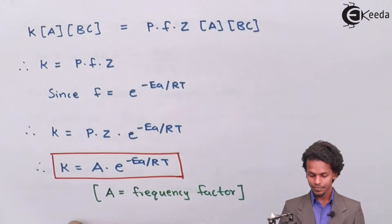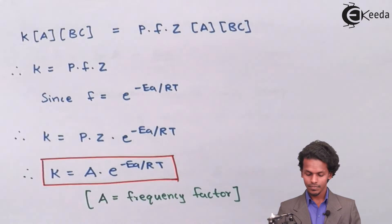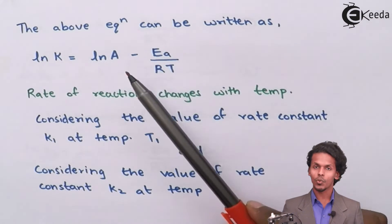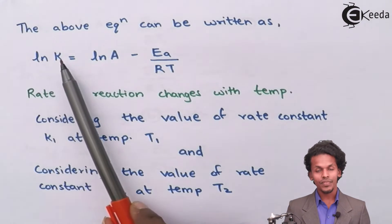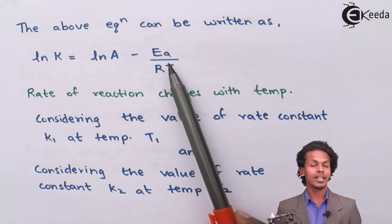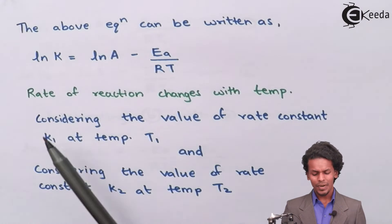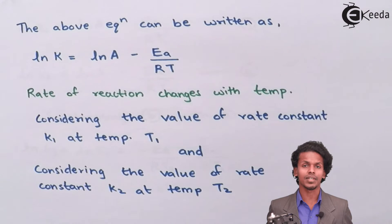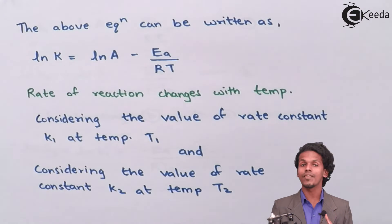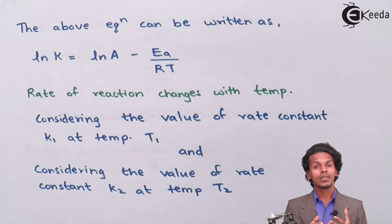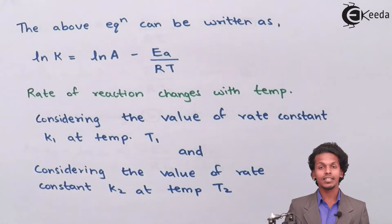By applying the natural log on both sides, we get: ln K equals ln A minus Ea upon RT. We also know that the reaction rate changes with temperature — as temperature increases, the possibility of collision increases, leading to a higher rate of reaction, and hence the rate of reaction depends on temperature.